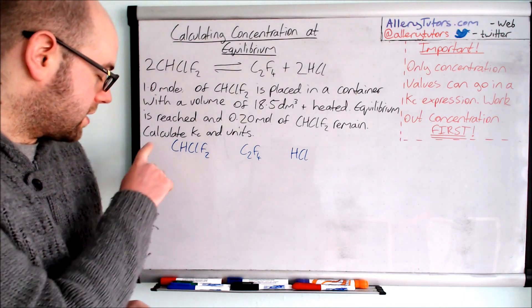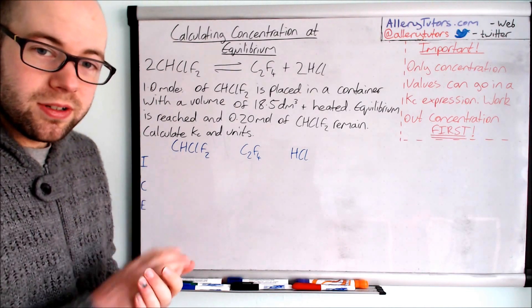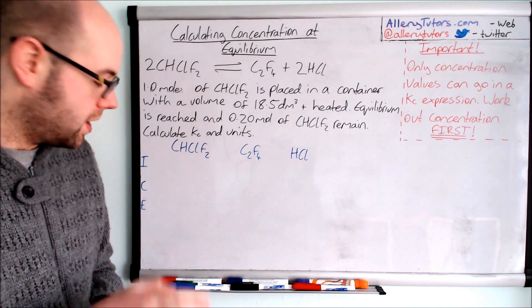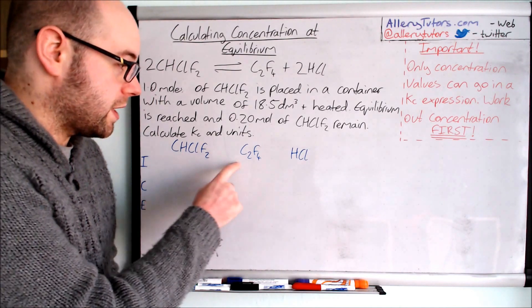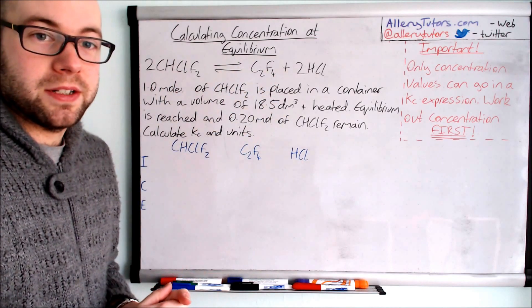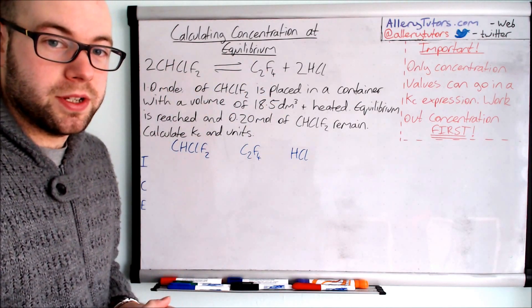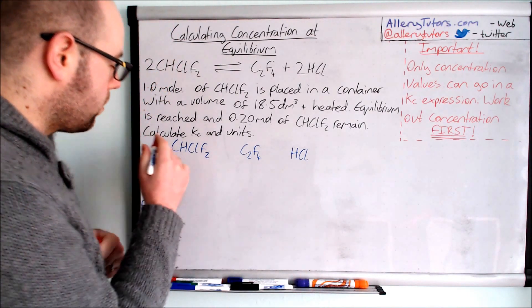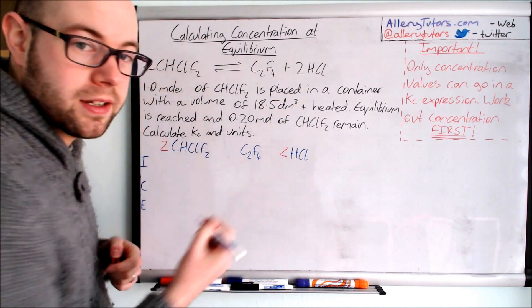The first thing we're going to do is use the ICE acronym. I stands for Initial number of moles, C stands for Change in number of moles, and E stands for Equilibrium number of moles. I've written the reactants and products in a table and included the mole ratios — a 2 for CHClF₂ and a 2 for HCl — because those will be useful.